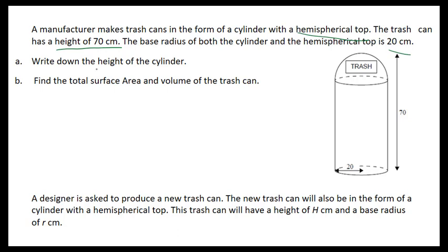Write down the height of the cylinder. We know the height of the hemisphere equals the radius, which is 20 cm. Therefore, the height of the cylinder H equals 70 minus 20, which equals 50 cm.